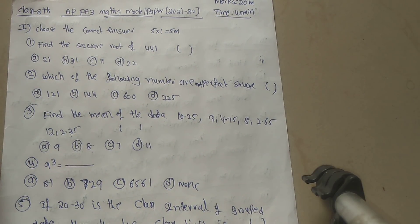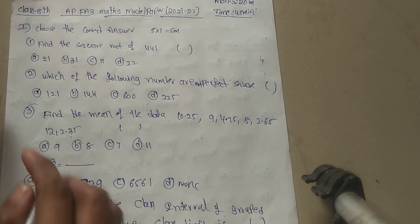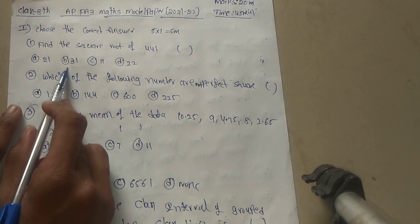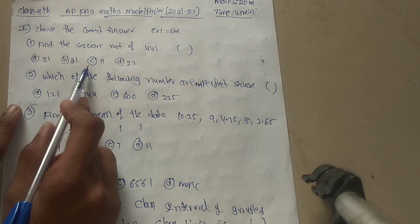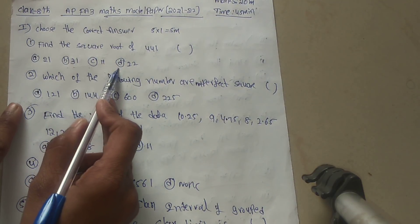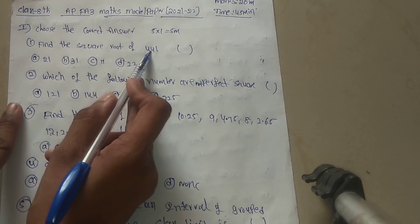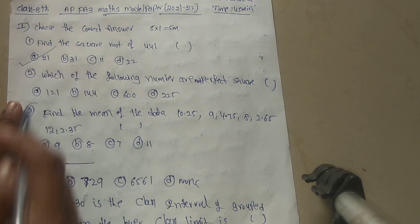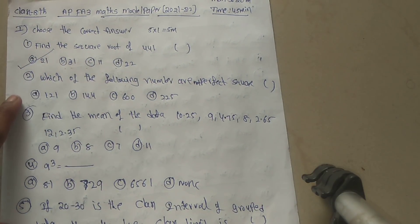First question: find the square root of 441. Option A: 21, Option B: 31, Option C: 11, Option D: 22. The square root of 441 is 21, so the answer is Option A.